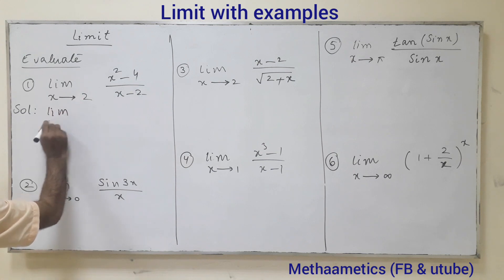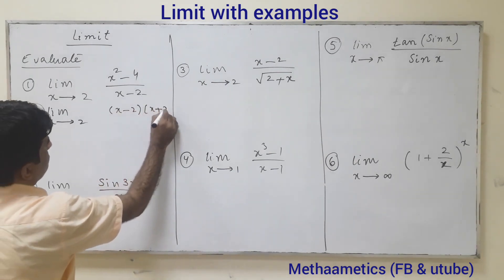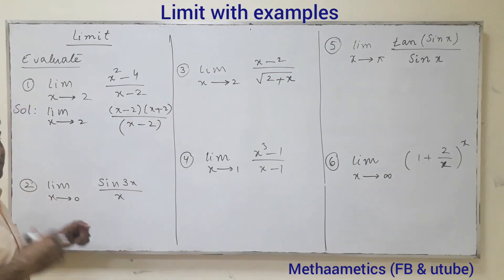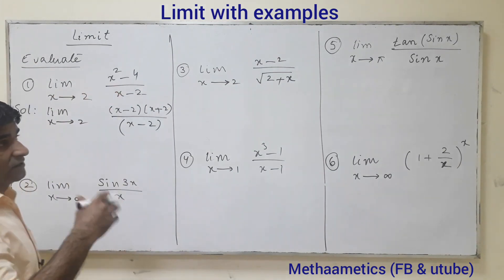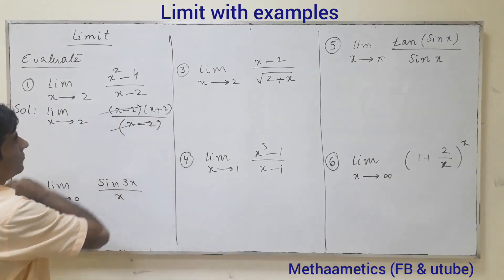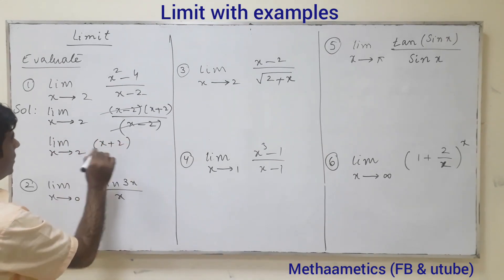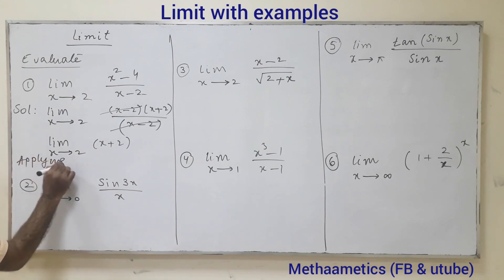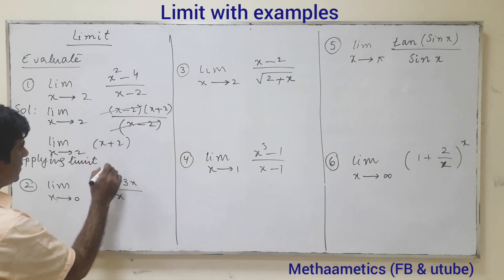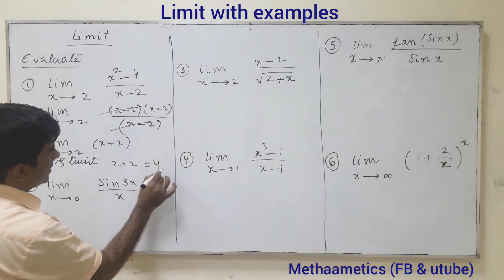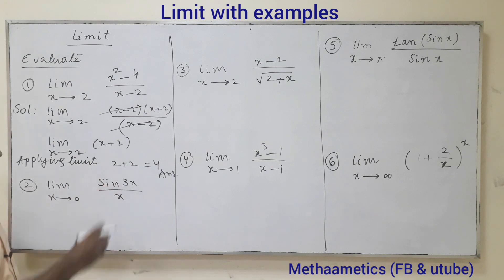Solution: limit as x tends to 2 of (x minus 2)(x plus 2) upon (x minus 2). The (x minus 2) terms cancel. We get limit as x tends to 2 of (x plus 2). Applying the limit, as x comes closer and closer to 2, this becomes 2 plus 2, which equals 4. That's the answer.